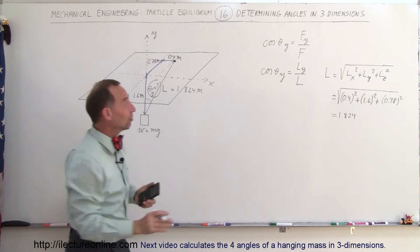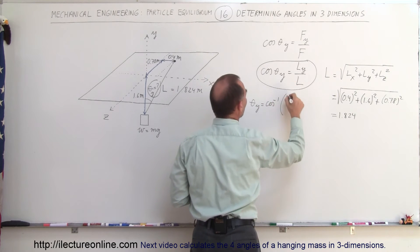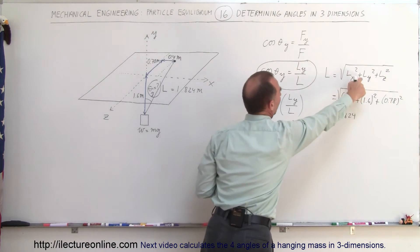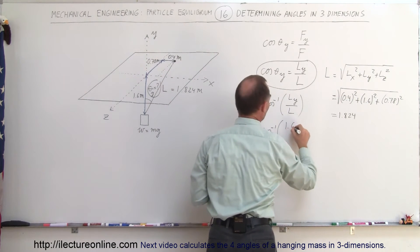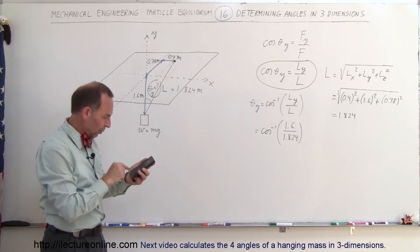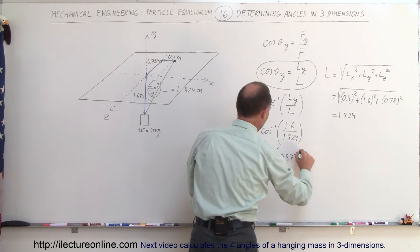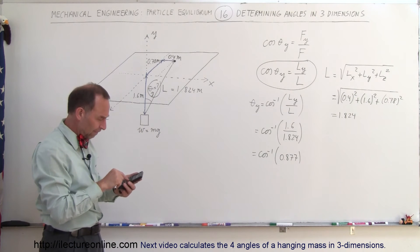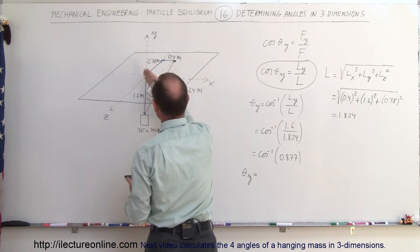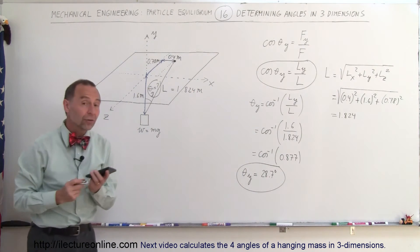Now to find the angle, we go back to the direction cosine definition. Theta sub y is equal to the arccosine of the y component divided by the total magnitude — that is, the arccosine of L sub y divided by L. L sub y is 1.6 and L is 1.824, giving us arccosine of 0.877, which equals 28.7 degrees. So the angle of line L with the vertical y direction is 28.7 degrees.